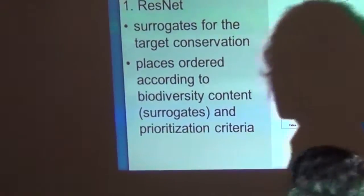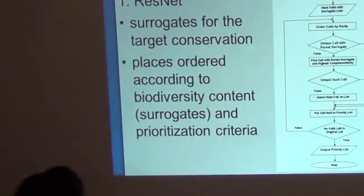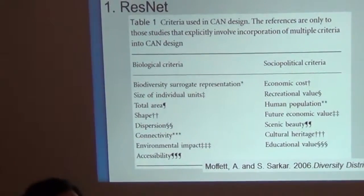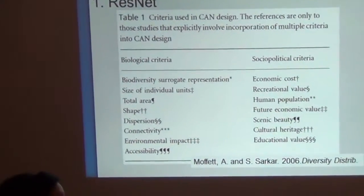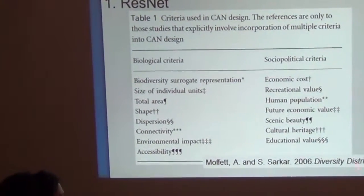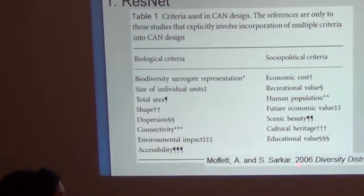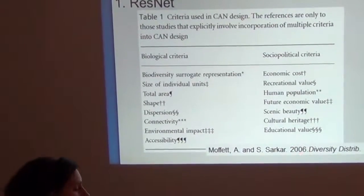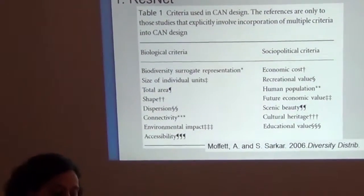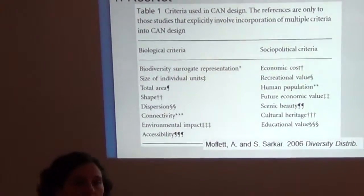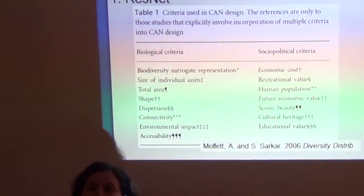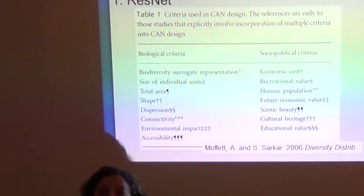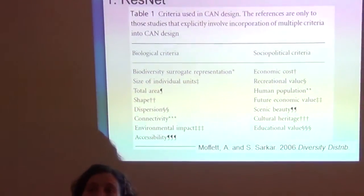So this is the first algorithm: ResNet. There is a fairly recent paper — published in Diversity and Distributions in 2006 — that reviews studies published up until 2006.